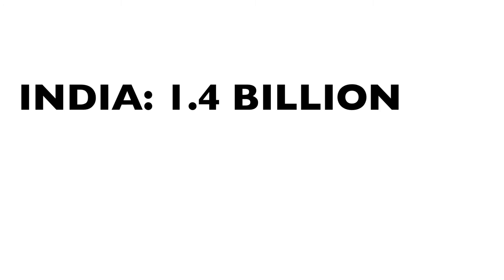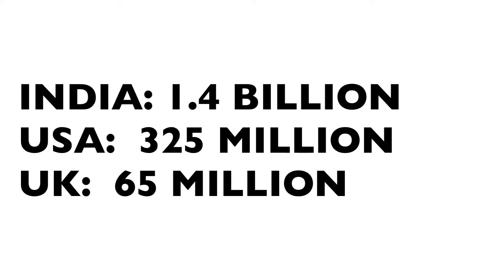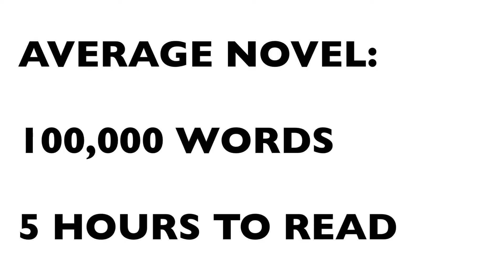Here are a few to keep in mind. Population sizes: the population of India is 1.4 billion, the US is 325 million, the UK is 65 million. Knowing the population of a handful of countries and cities really helps when trying to work out things like market sizing. Time and efficiency: the average novel is 100,000 words long and takes about five hours to read — which helps you realize that a 10,000-word report should really only take about 30 minutes to read.